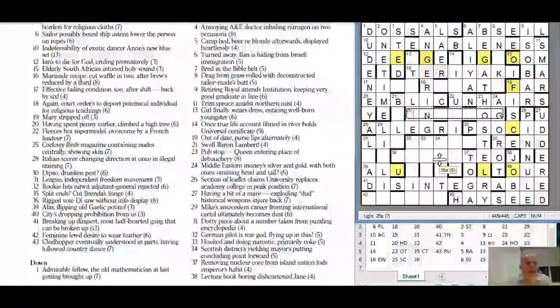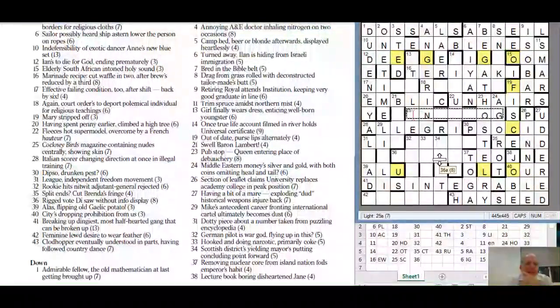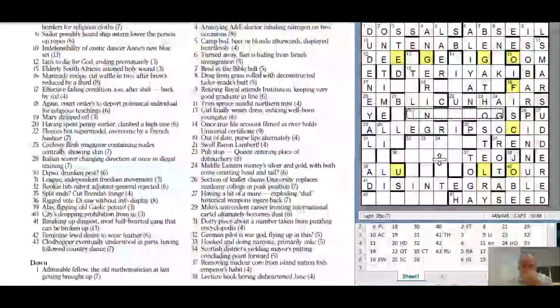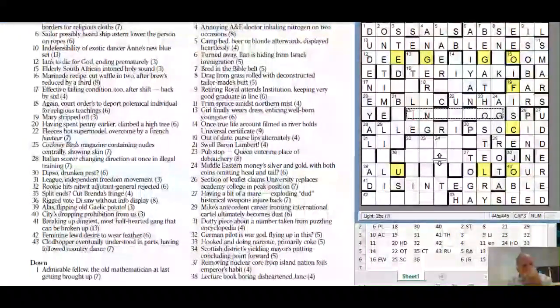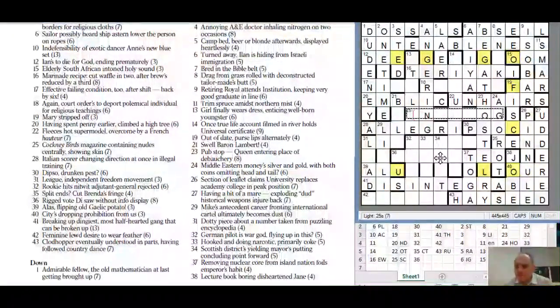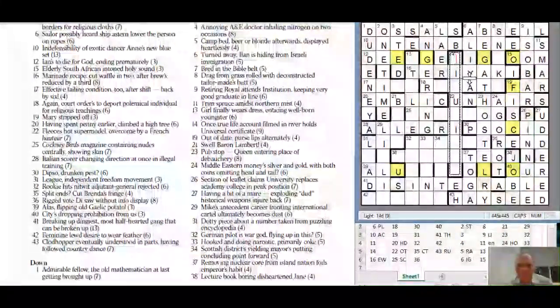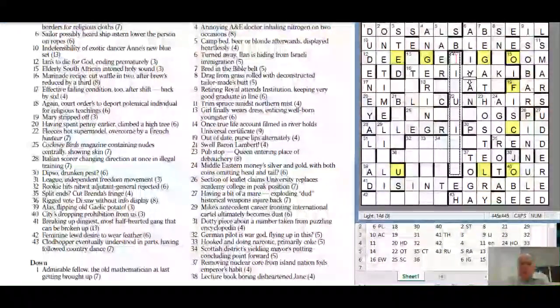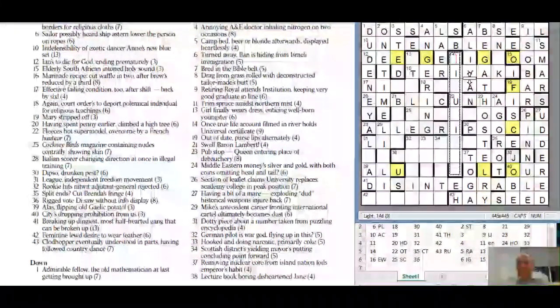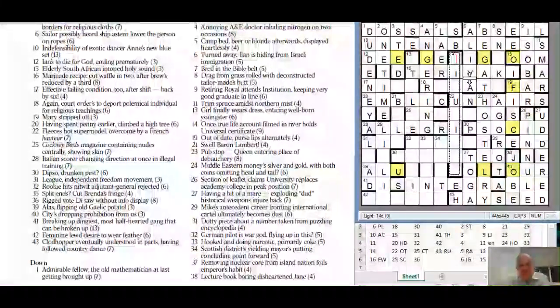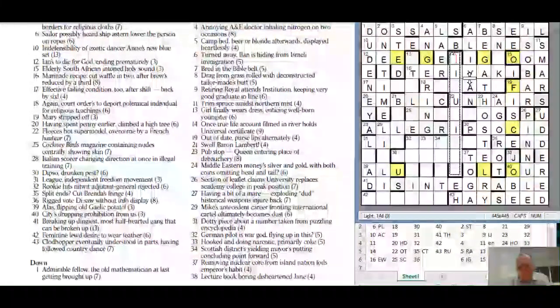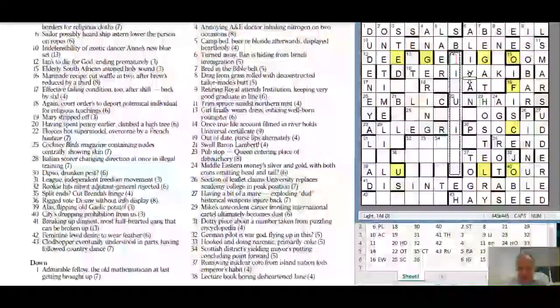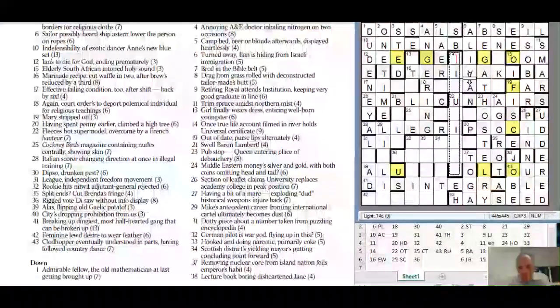Thirty one down: dotty piece about a number - LED. A dotty piece is a kind of light emitting diode display taken from puzzling encyclopedia. Twenty nine: Mike's antecedent Lima career fronting I think Alu might well be wrong. Alas I don't know what's a potato flipping old Gaelic potato.